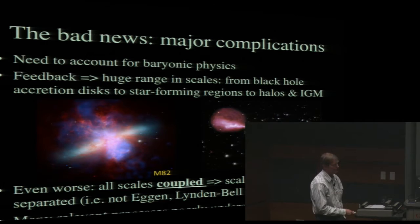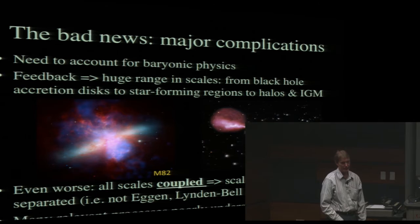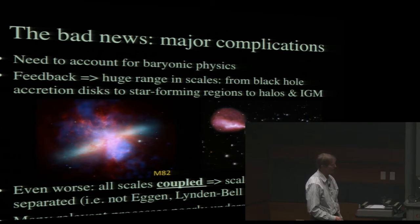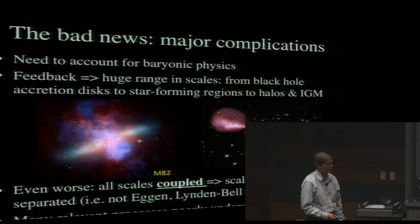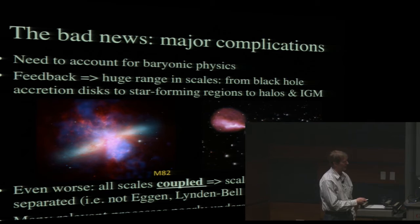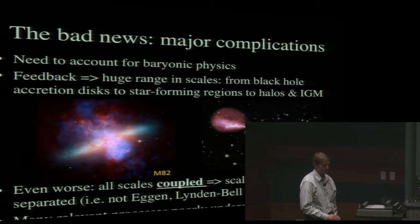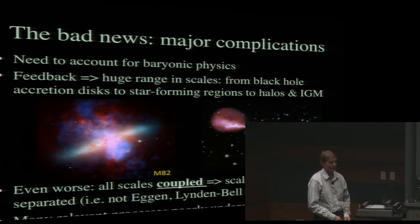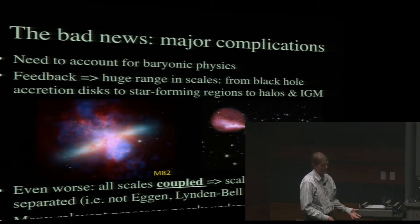You can immediately see that because these processes can take material from small regions inside galaxies and put them on cosmological scales, we have a very significant problem in the dynamic range we have to deal with. Ideally we have to describe the cosmological framework for how galaxies form but also account for small-scale processes occurring within them. Because of feedback, all these different scales are coupled together—small scales within galaxies can affect the larger scales that provide the material to form the galaxies in the first place. This makes the problem greatly more complicated because we can't separate the problem by scale, as Eggen, Lynden-Bell, and Sandage imagined in the 1960s.